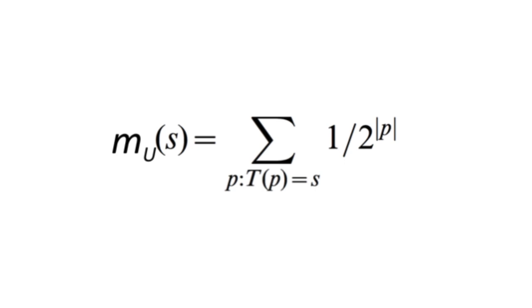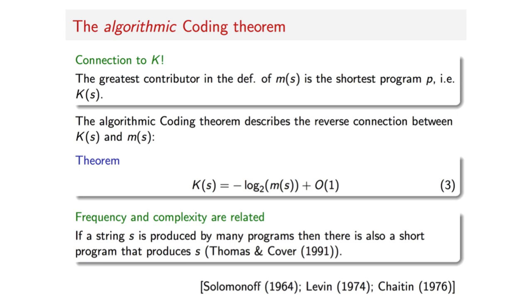The algorithmic coding theorem formally establishes this connection between algorithmic complexity and algorithmic probability, where algorithmic complexity is denoted by k. The theorem establishes that the algorithmic complexity of a string is proportional to the negative logarithm of its algorithmic probability.